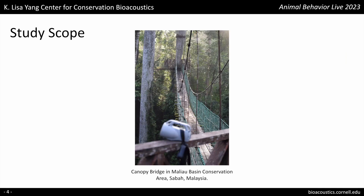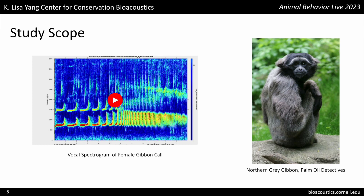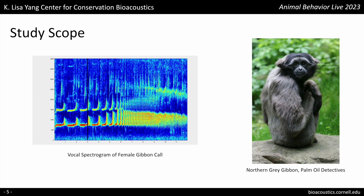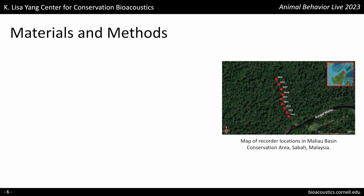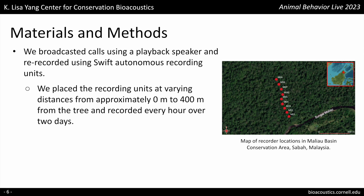Here is the canopy bridge where the recordings were completed, and here is the spectrogram of a female gibbon call. The x-axis is time, the y-axis is frequency, and color corresponds to intensity. For our study, we broadcasted calls using a playback speaker and re-recorded using Swift Autonomous Recording Units. We placed the recording units at varying distances from approximately 0 meters to 400 meters from the tree and recorded every hour over two days.